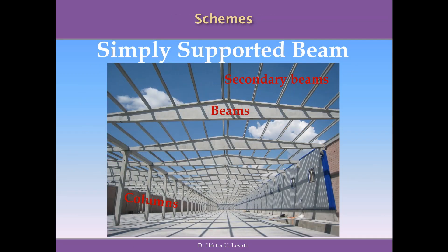I want to show how these theoretical schemes are applied in reality. In this picture, we have a building where we can clearly identify secondary beams that are part of the roof structure. There are main beams called delta beams because of their shape. There is a load path where the roof load discharges onto the secondary beams, which discharge onto the delta beams, which discharge onto the columns, and the columns to the foundations. We can identify the columns, delta beams, secondary beams, and lateral rectangular beams. This is also clearly a prefabricated structure.